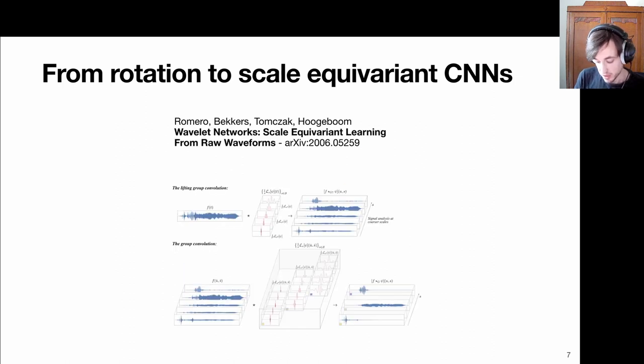This notion of group equivalence obviously also translates to other types of domains where symmetries are important. I think this is a nice example of scale equivalent learning on raw waveforms. For example, if you look at audio and you want to do some sort of speech recognition, then a word can be spoken by me or someone else with a lower voice or a higher voice.